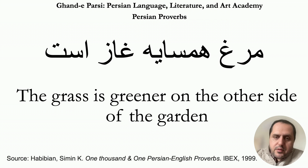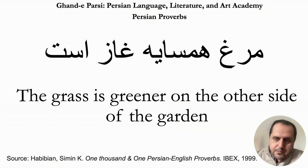If we want to understand it literally, we should say that مرغ همسایه قاز است means that the hen of the neighbor is goose. The hen of the neighbor is goose.